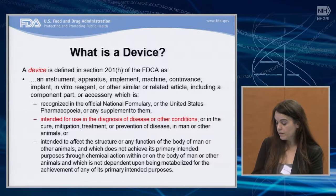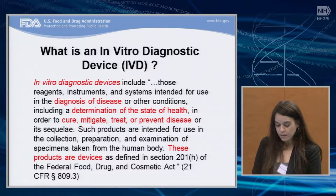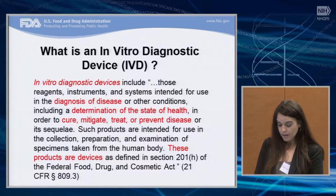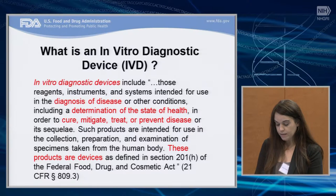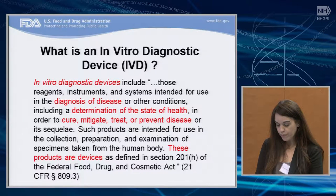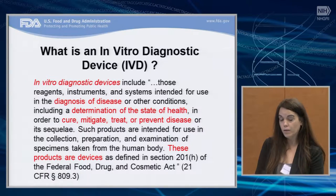So, this is the definition of the device from the Food and Drug Act. The in vitro diagnostic device includes those reagents, instruments, and systems intended for use in the diagnosis of disease or other conditions, including a determination of the state of health in order to cure, mitigate, treat, or prevent disease or its sequelae. Such products are intended for use in the collection, preparation, and examination of specimens taken from the body. These products are devices as defined in the Federal Food, Drug, and Cosmetic Act, and this definition comes from 21 CFR 809.3, our code of federal regulations.